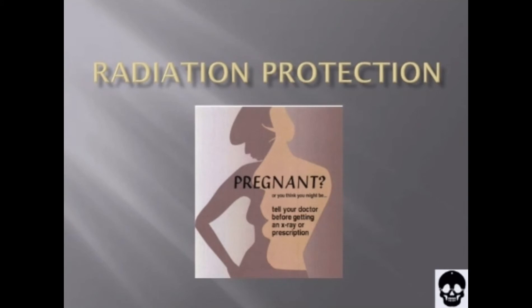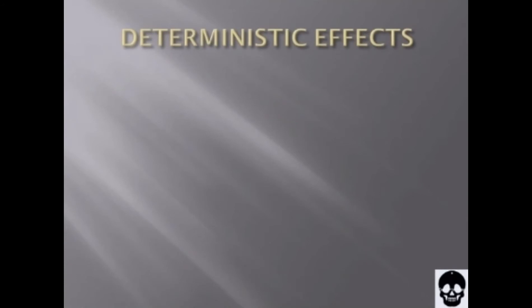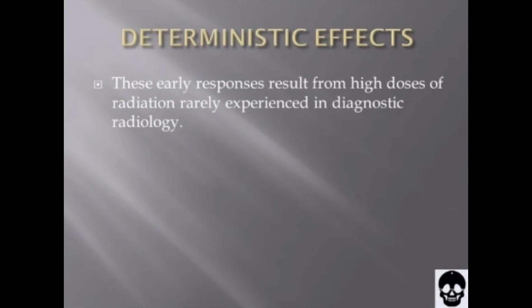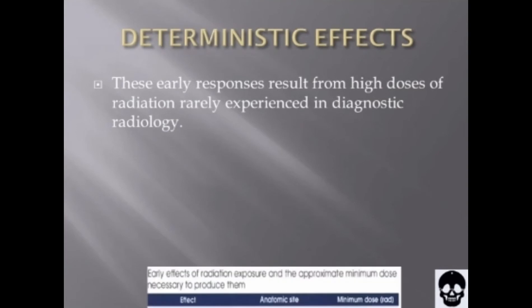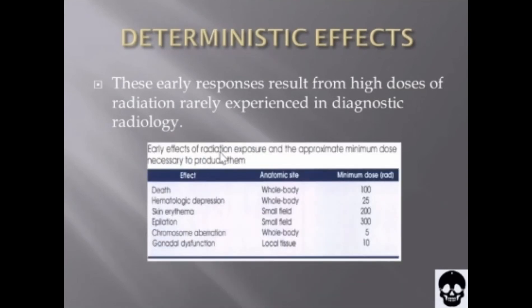Now we look at deterministic effects. These early responses result from high doses of radiation, rarely experienced in diagnostic radiology. This table shows the early effects of radiation exposure and the approximate minimum dose necessary to produce them. The first effect is death, with the anatomic site being the whole body and a minimum dose of 100 rad.